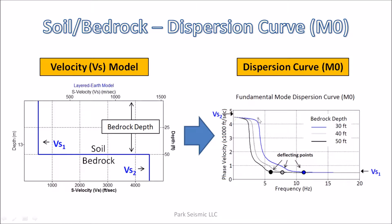And another asymptotic trend at the low frequency end that approaches the shear wave velocity of bedrock. The only difference between these three curves is the frequency where this deflecting point occurs — it changes with bedrock depth. The deflecting point is the point where the asymptotic trend from the high frequency end starts to deviate, and it occurs at lower frequency as bedrock depth becomes deeper.